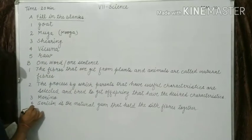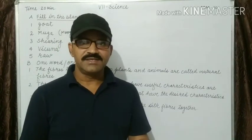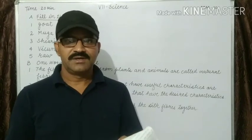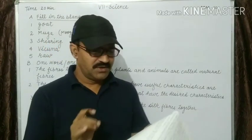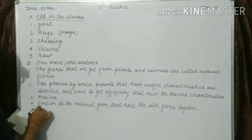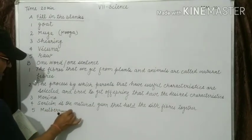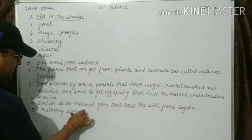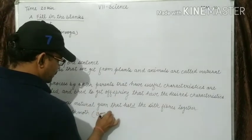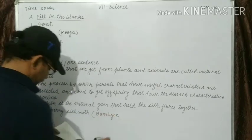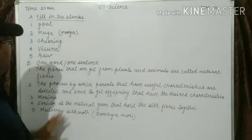Question number five: name the most common silk moth. Answer is mulberry silk moth. Scientific name is Bombyx mori. The answer is mulberry silk moth; scientific name is Bombyx mori.